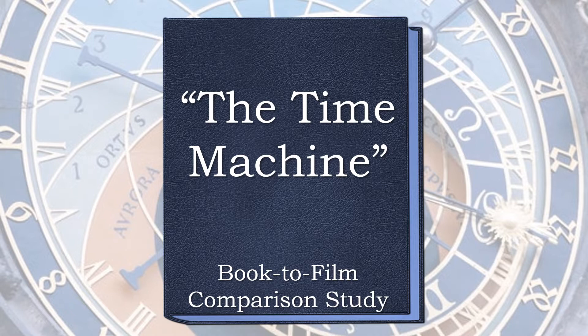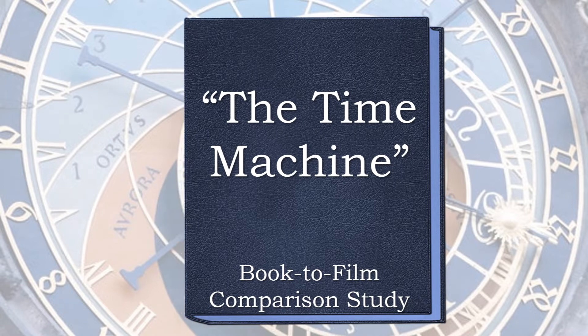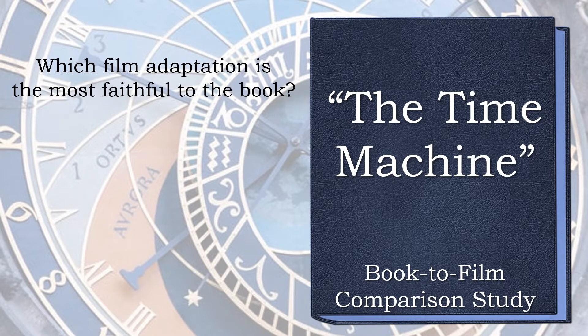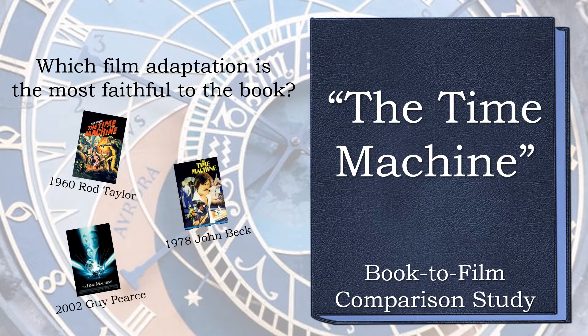This novella tells the story of an unnamed time traveler who builds a time machine to explore the future of the human race and doesn't find what he thought he'd find. It has been adapted for screen three times. But which is the most faithful to the original text? I've watched all three versions and scored them in terms of characters, elements, and plot points for faithfulness to the text. A document with the elements in each category can be found in a link in the description for this video.